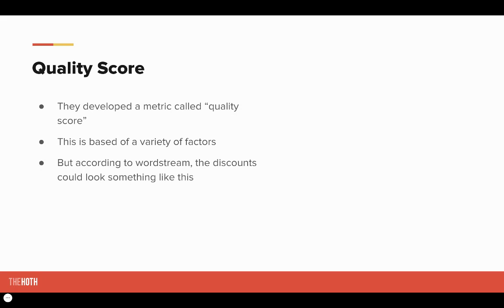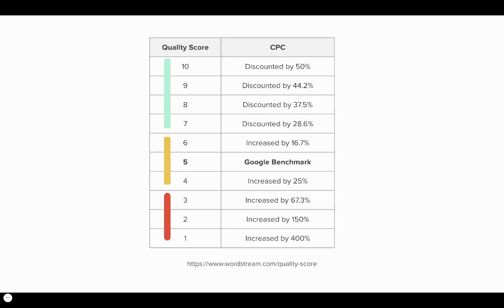So how do they deem those ads good or bad? It comes from a metric they call quality score. It's based on a variety of factors like ad relevance, landing page experience, and click-through rate — or expected click-through rate. Those three factors really make it up. And according to Wordstream, the discounts are pretty significant when you look at it.